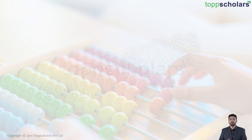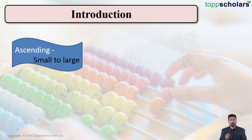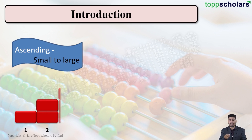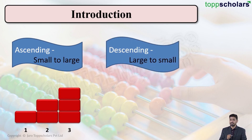Hello students, welcome to Top Scholars. Today we are going to learn about five-digit numbers and how to write them in ascending and descending order. Ascending order means we have to write from small to large — for example, one, then two, and then three. Descending is nothing but large to small.